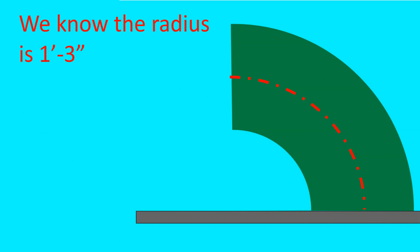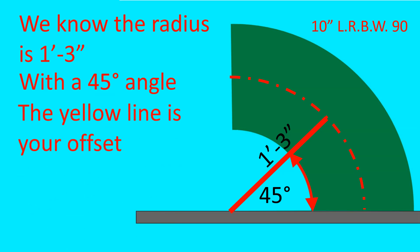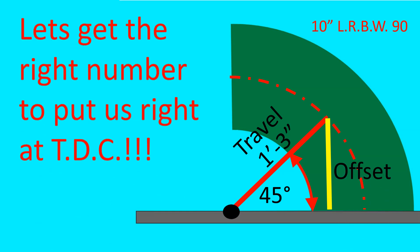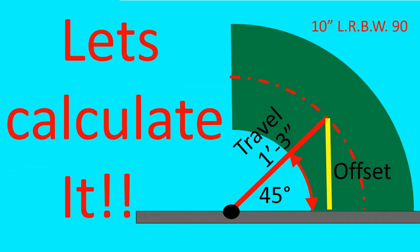We know the radius is 1 foot 3. We know we're looking for a 45. With a 45 degree angle, the yellow line would be the offset. And we're going to solve for that. 1 foot 3 is the travel. The yellow line, we don't know. Let's get the right number to put us right at top dead center. Let's calculate it.